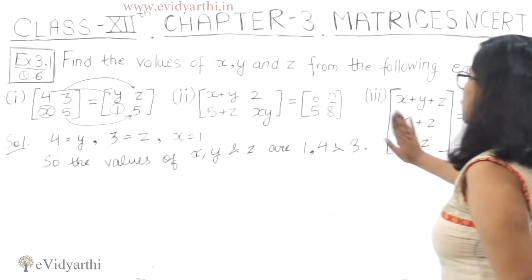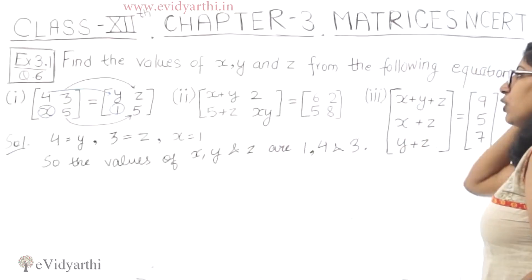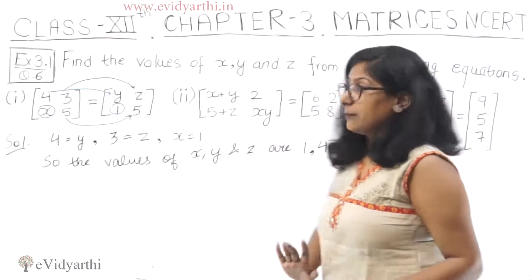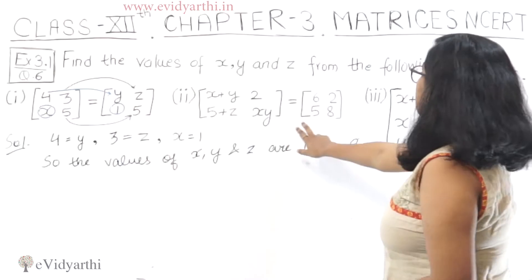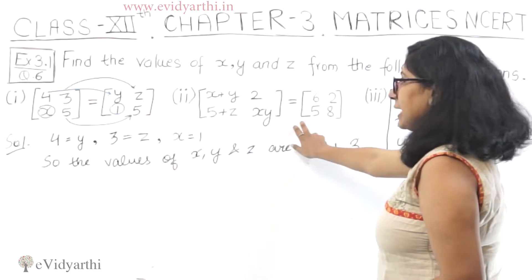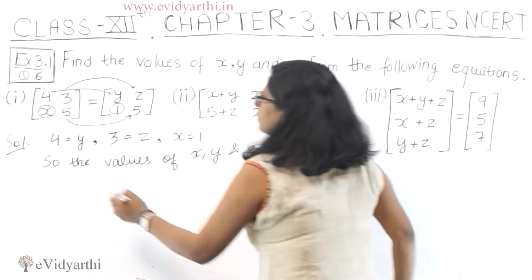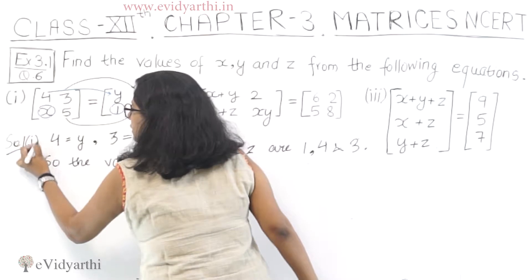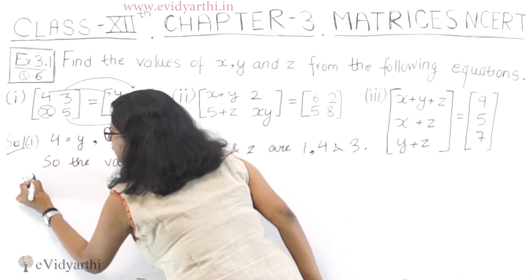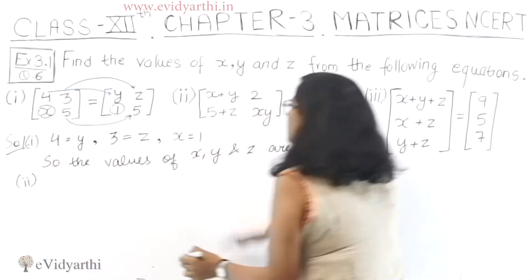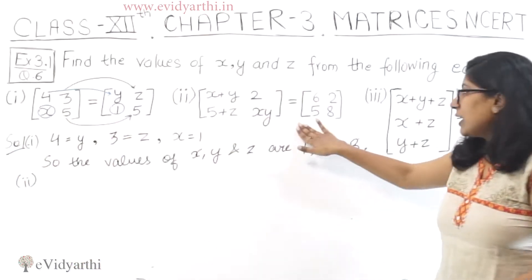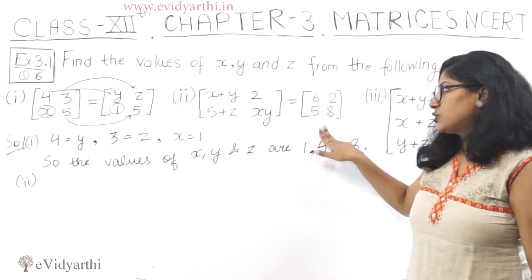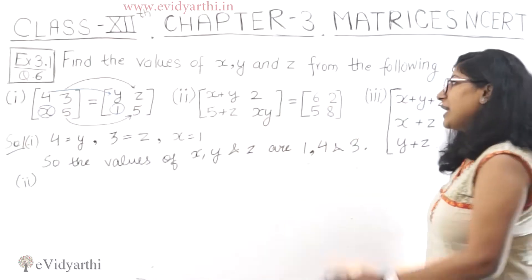In this way, the other two parts will also be solved. I will show you one more part — let's see the second part. The matrices are written here. See the order: 2×2 and 2×2. This is size 7. You can see the first entry — first row, first column — this is a11.